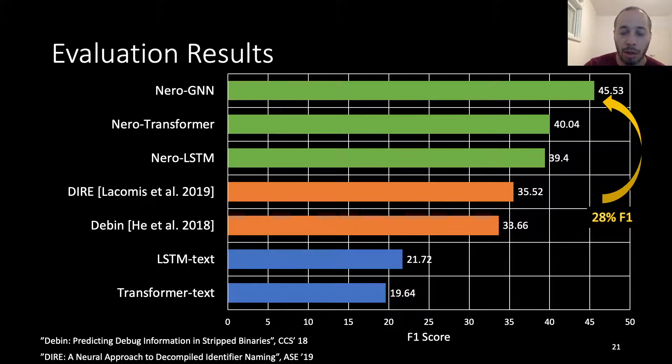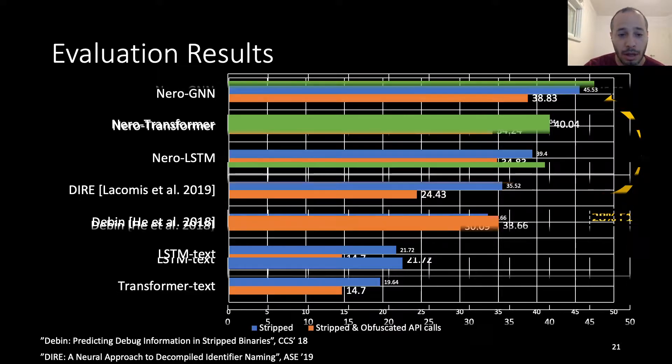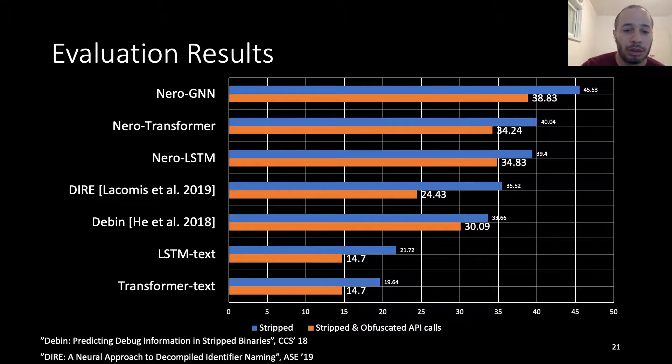Now we move to the results of the second dataset, which is stripped and obfuscated API calls and showing them side by side with the stripped dataset. As we can see, all the models suffered degradation in F1 score results, but still our GNN module is the best performing compared to the other modules.